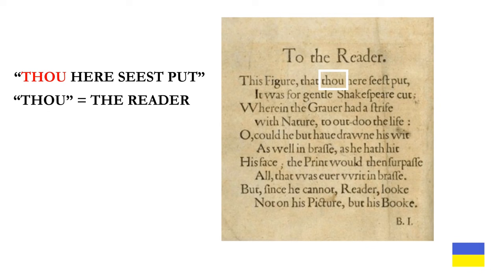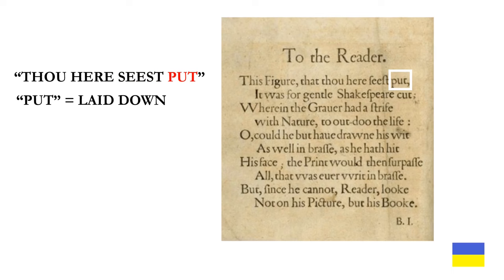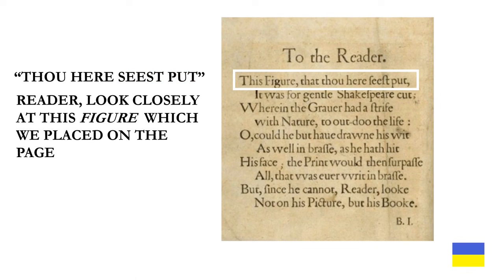'Thou' means the reader. 'Here' means the page opposite to the one where the poem is on. In the context of the title page, 'seest' means to look closely — because when you're using gradation or climax, you want each word to have more emphasis than the word previous to it. Finally, 'put' means laid down. Therefore, we can interpret line one as: reader, look closely at this figure which we placed on the page.